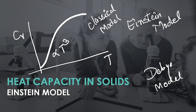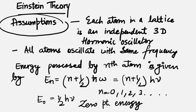So let's start. Einstein's theory started with two assumptions. First, each atom in a lattice is an independent 3D harmonic oscillator — independent, meaning there is no interaction between neighboring atoms. The word 'independent' is important here. The second assumption is that all atoms oscillate with the same frequency.